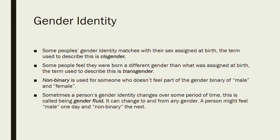Gender identity — let's talk about it. Some people's gender identity matches with the sex they were assigned at birth. The term used to describe this is cisgender. For example, say you were born with female anatomy and you also feel like a girl — that means you are cisgender. Some people, though, feel like they were born a different gender than the sex they were assigned at birth. The term used to describe this is transgender. Often times trans people will feel they were born in the wrong body. And nowadays it is possible to transition, which is really cool.